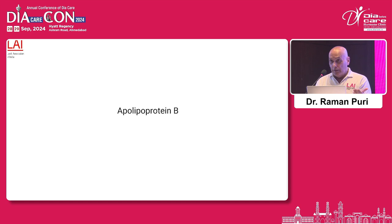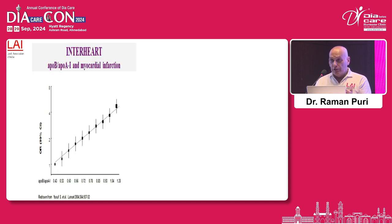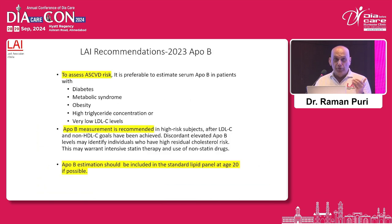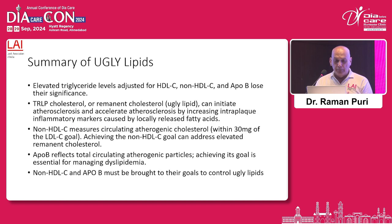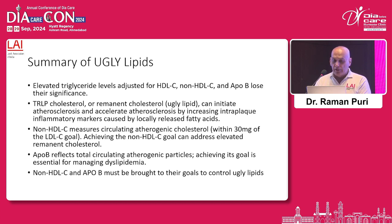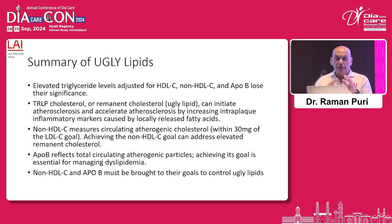Each atherogenic particle carries one ApoB, and the INTERHEART study shows a strong positive linear relationship of ApoB-to-ApoA ratio with coronary artery disease. Therefore, the Lipid Association of India has strongly recommended ApoB as a secondary target — if possible, it should be routinely done at age 20 if a person can afford it. The summary of ugly lipids: elevated triglyceride level adjusted for HDL, non-HDL cholesterol, and ApoB loses significance. So if you have achieved non-HDL cholesterol level and ApoB level, even if triglyceride is raised, please forget about it — nothing is going to happen to the patient. Always try to achieve remnant cholesterol, non-HDL cholesterol, and ApoB targets when treating patients with dyslipidemia.